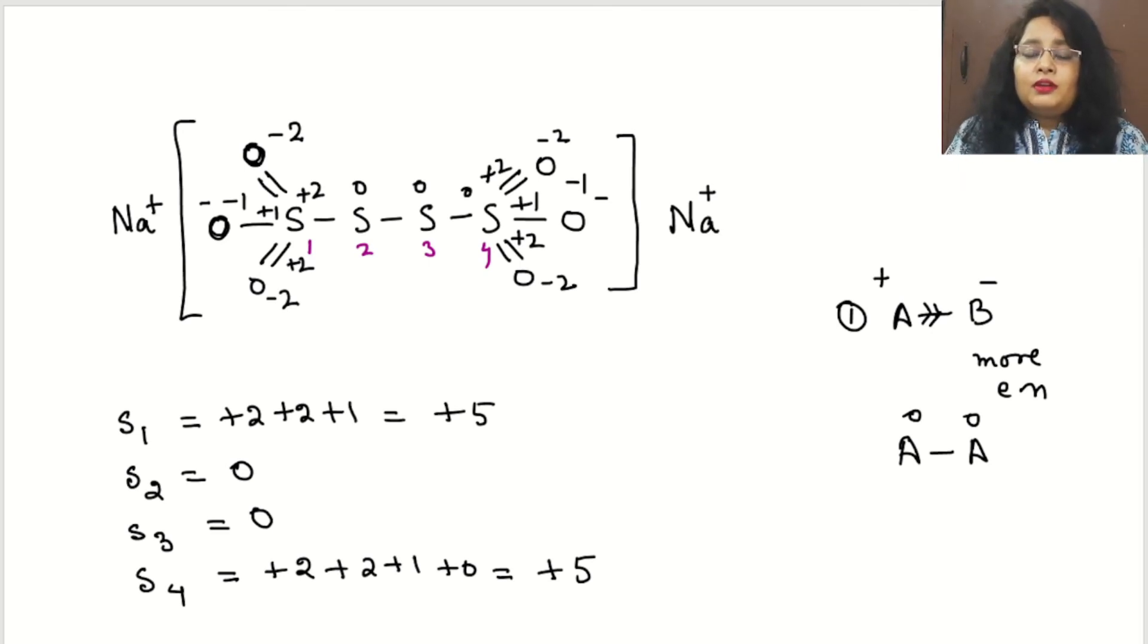Oxidation number of sulfur in Na₂S₄O₆, that will be +5, 0, 0, +5.